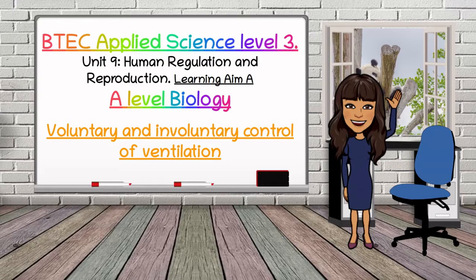Hi everyone and welcome to another video by BioTeach. This time I want to focus on the BTEC assignment unit 9, which is called human regulation and reproduction. There are three learning aims to this unit and learning aim A looks at the interrelationship and nervous control of the cardiovascular and respiratory system. This video is specifically looking at voluntary and involuntary control of ventilation and the effects of exercise.